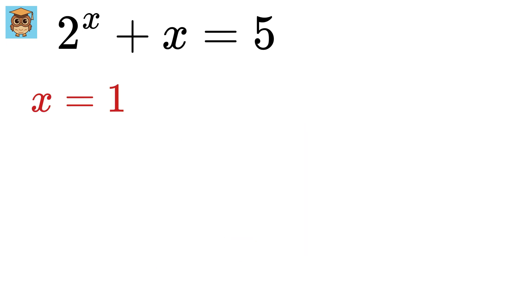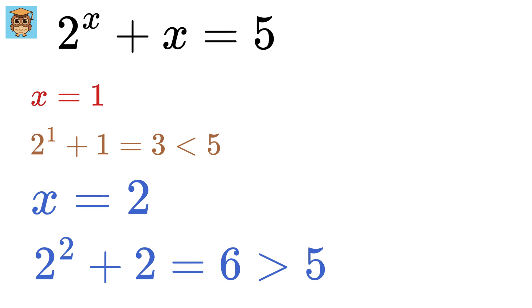First use x equals 1, so we get 2 to the 1 plus 1 equals 3, which is less than 5. Now use x equals 2, which gives us 2 to the 2 plus 2 equals 6, which is greater than 5.